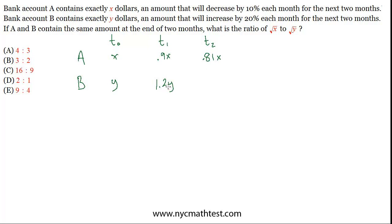And the same situation for Y. This will end up being 20% more than 1.2, which is 1.44Y. That's just 12 times 12 is 1.44, right? So, these are how much each account has if they start with X and Y.